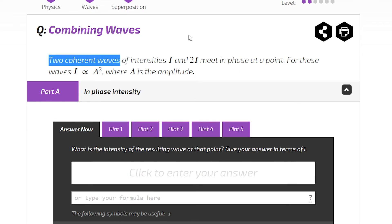So it says, we have two coherent waves of intensities i and 2i. For these two waves, intensity is proportional to amplitude squared. They meet and interfere at a point. You want to find the intensity of the resultant wave at that point. Give your answer in terms of i.